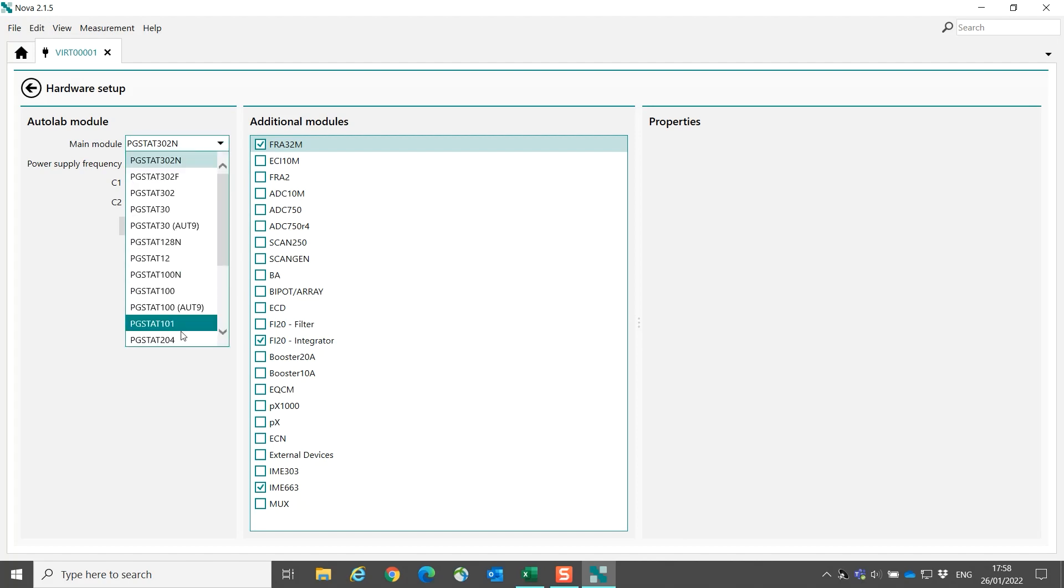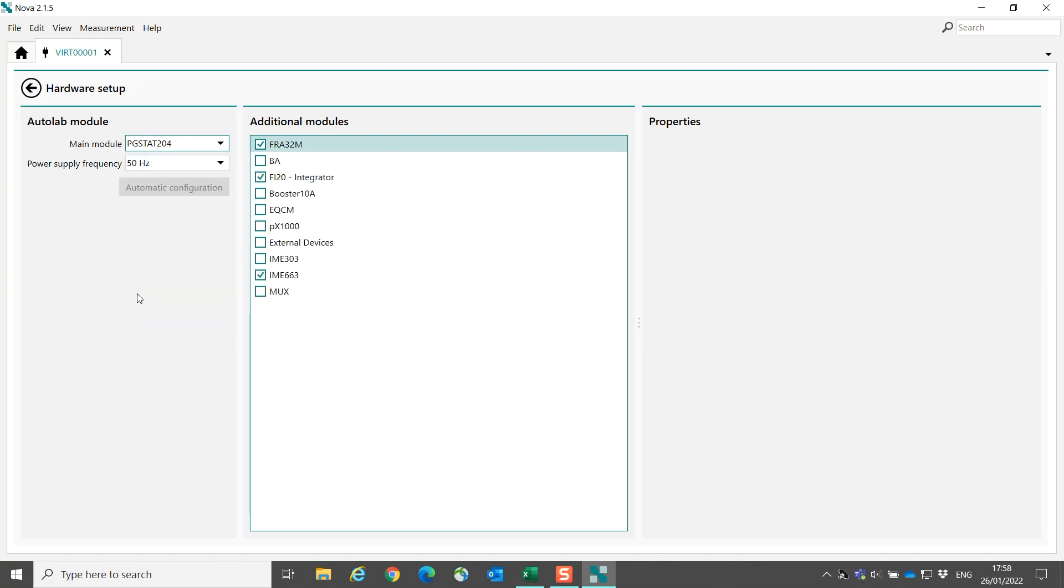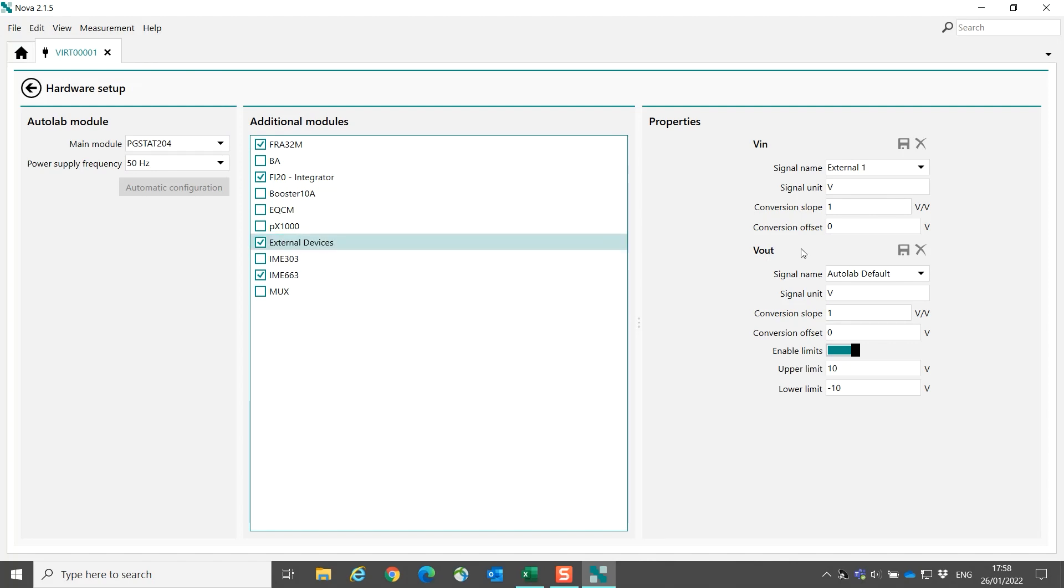The rotating disk electrode is controlled through the monitor cable of the PG-Stat 204. Then we have to select external devices. And in the Vout of the monitor cable, we select the Autolab RDE. And now the settings are configured for the 204.